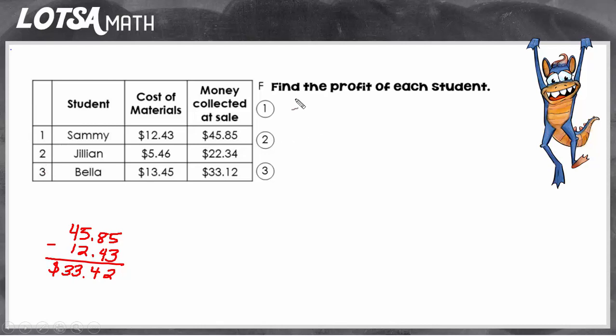So Sammy, number one, actually made $33.42. Profit is just the amount of money that you actually have more than when you started. So you have to take the amount you collected and subtract anything you spent to have your real amount of money that you made, and that's your profit.